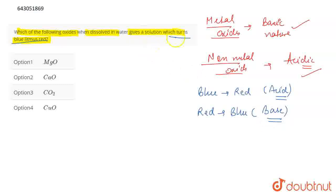So, you have to identify a solution that turns blue litmus to red, which means you have to identify a non-metallic oxide between all of the given options. If we talk about MgO, then MgO is a metal oxide because Mg is a metal, which means that it is basic in nature. So, it will turn red to blue and not blue to red.